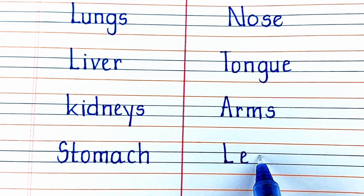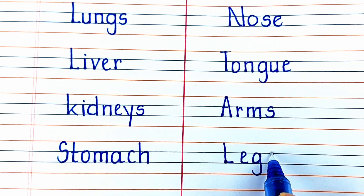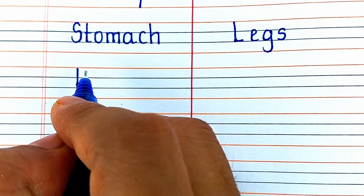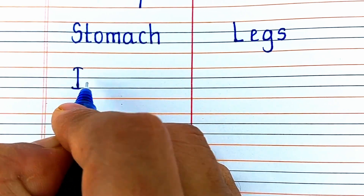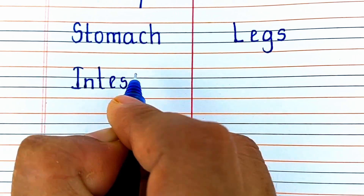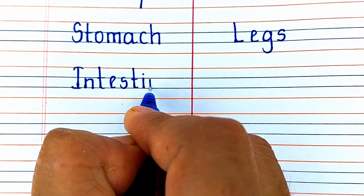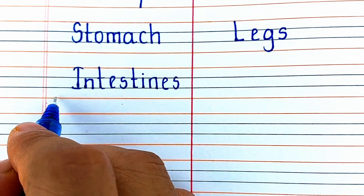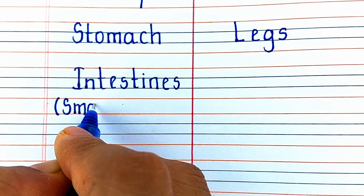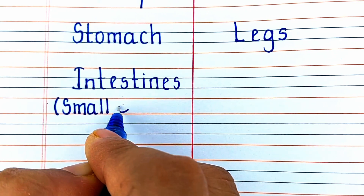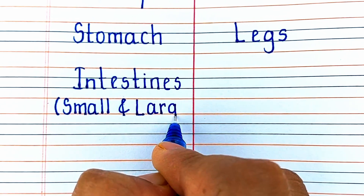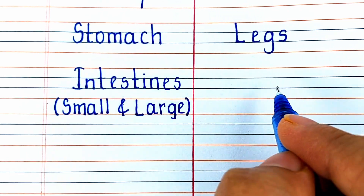The next external organ in our list is legs. The next internal organ in our list is the intestines — that is the small intestine and the large intestine.